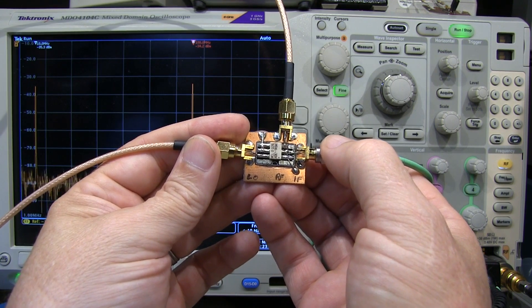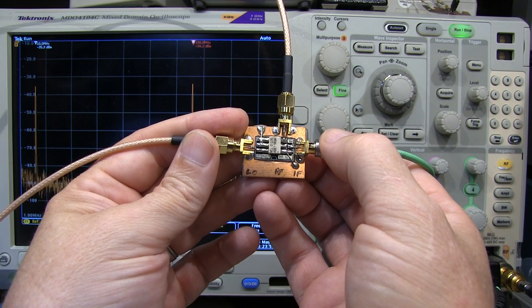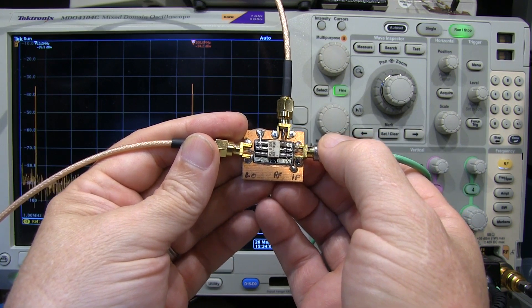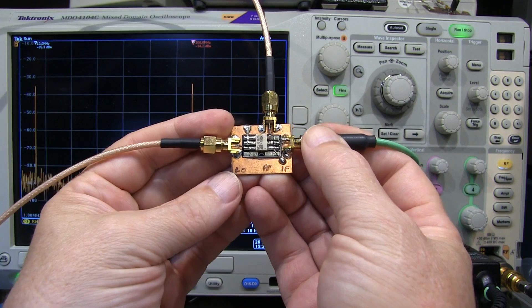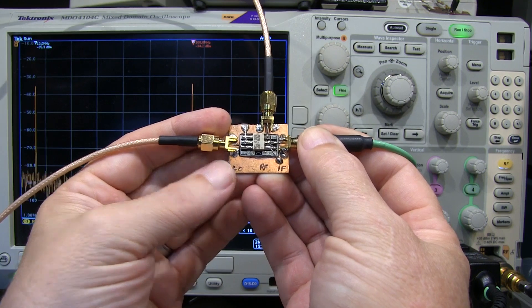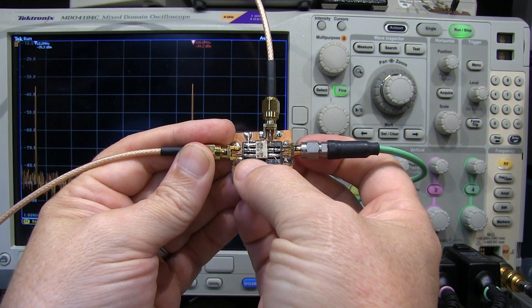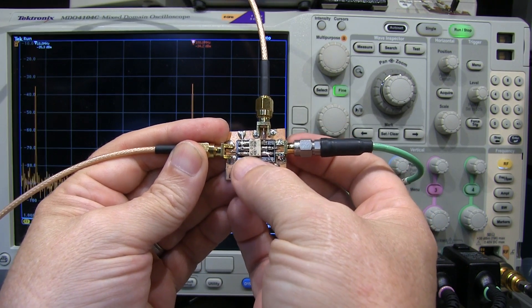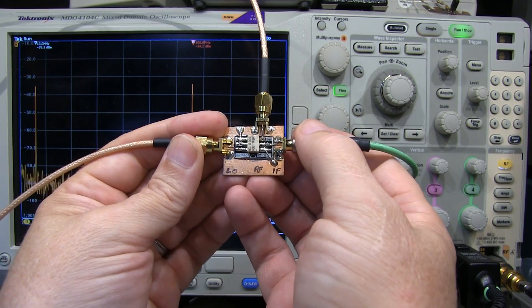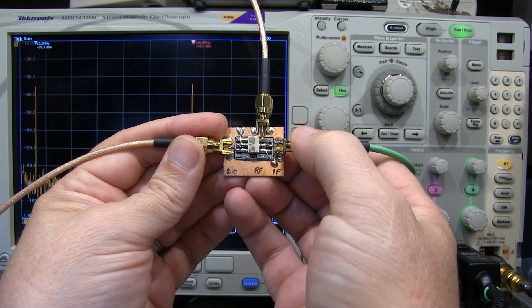And you'll see that there are mixers that are level 7 mixers, or level 10 mixers, or level 17 mixers, and what they refer to is the drive level for the local oscillator input frequency. A level 7 mixer means that the mixer requires plus 7 dBm drive level into the local oscillator port. Level 10 means it's 10 dBm, level 17 means it's 17 dBm, etc.